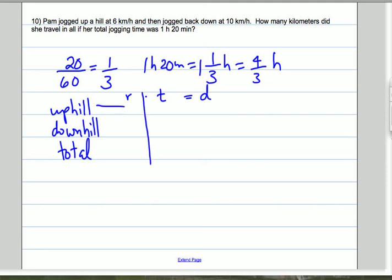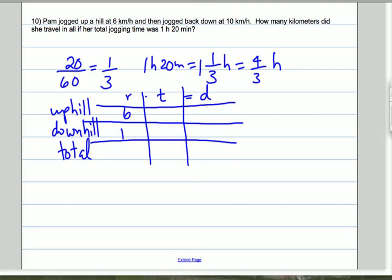So going uphill, her rate is 6 kilometers per hour. Going downhill, her rate is faster, it's 10 kilometers per hour. We know that the total distance is what we are looking for - how many kilometers did she travel in all?